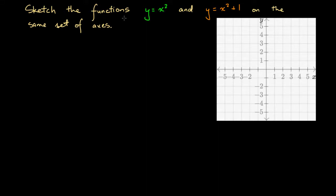In this presentation we're going to look at vertically shifting functions and other graphs. Up until now we've had a look at horizontal shifting, and now we're going to have a look at vertical shifting. In order to do this we're going to consider the instruction: sketch the functions y equals x squared and y equals x squared plus 1 on the same set of axes.